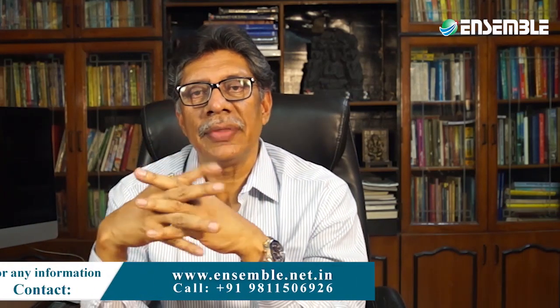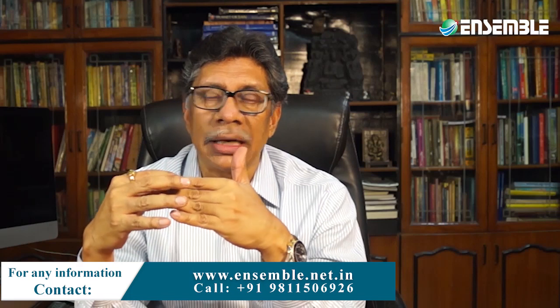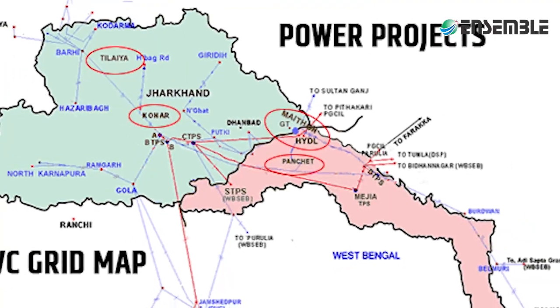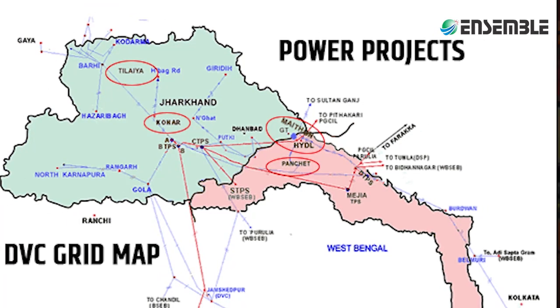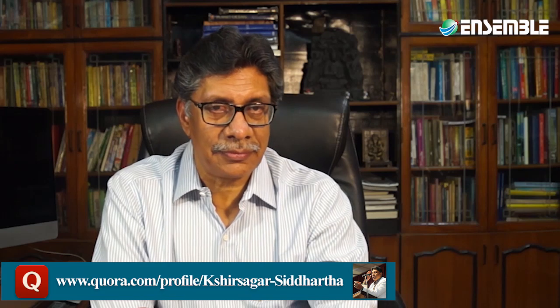The Chhotanagpur region has seen the first form of interstate-level planning, which was the Damodar Valley Corporation (DVC), modeled after the Tennessee Valley Authority. The Eastern Highlands can also be linked with the Dandakaranya region. A relevant question is: despite the significance of this whole region, why does the Eastern Highland region continue to be backward? This backwardness remains a key concern for the entire region.